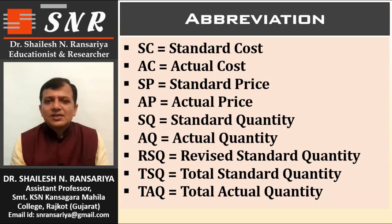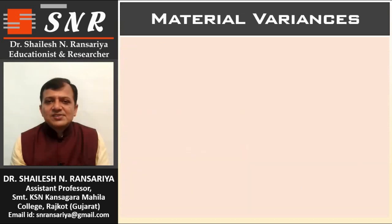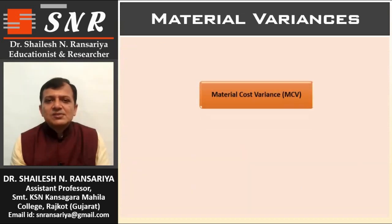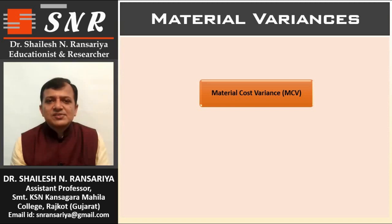Now, material variances. The first variance is Material Cost Variance, MCV. It is classified into two categories: first, Material Price Variance, MPV, and second, Material Usage Variance, MUV.